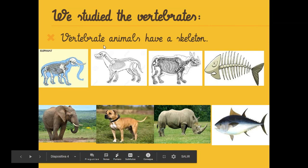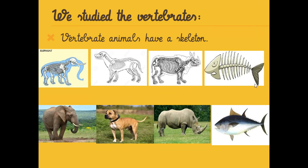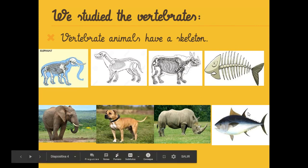Look at the second photo — this is the skeleton of a dog. Then we have the skeleton of a rhino. And then we have the skeleton of a fish.